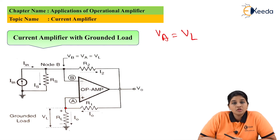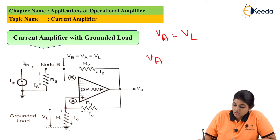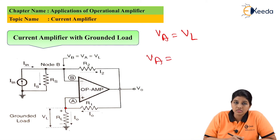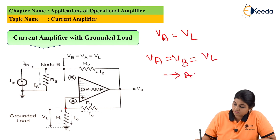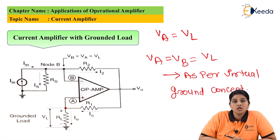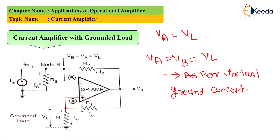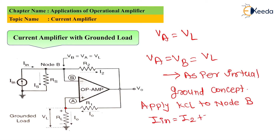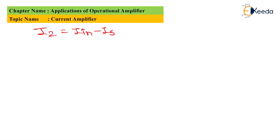According to the virtual ground concept, if one terminal is connected to ground, then the other terminal will also be at the same potential. So as per the virtual ground concept, since VA = VL, VB will also be at the same potential. Now, to continue with the analysis, we apply KCL to node B. When we apply KCL to node B, we obtain the equation: i_in = i2 + i_s. From this equation we obtain the value of i2, so i2 = i_in - i_s.